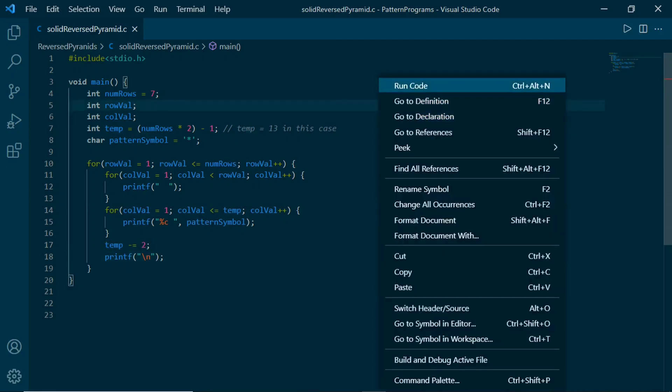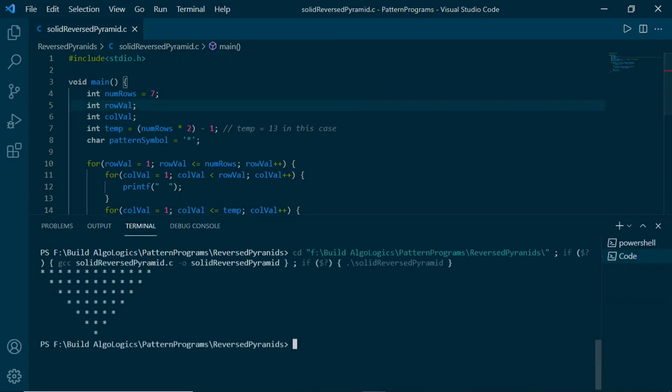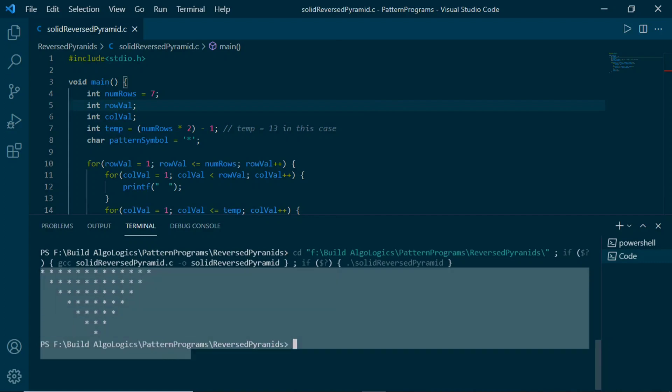Let's run it to see the output. Here it is, we get our reverse pyramid printed. Now let's see our second pattern.